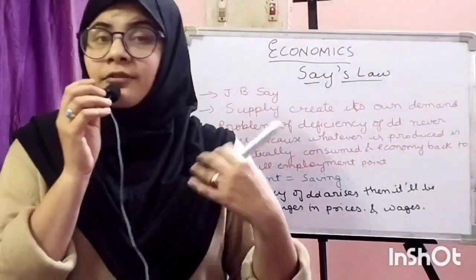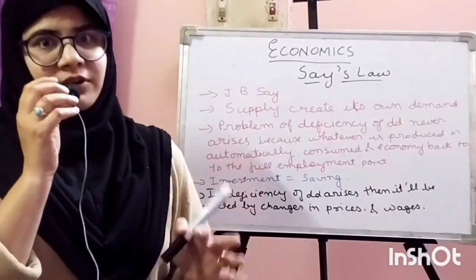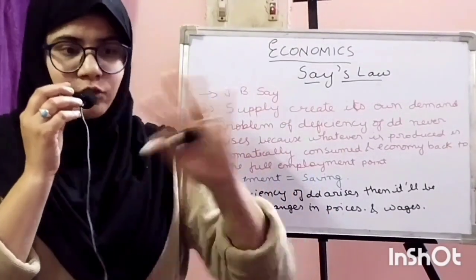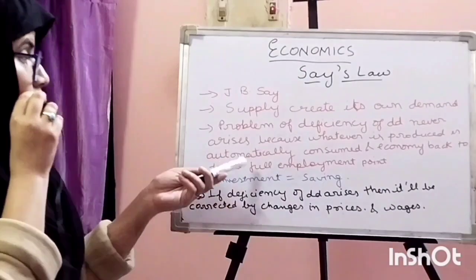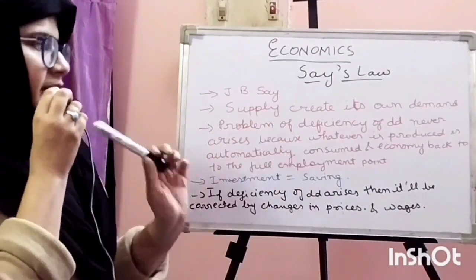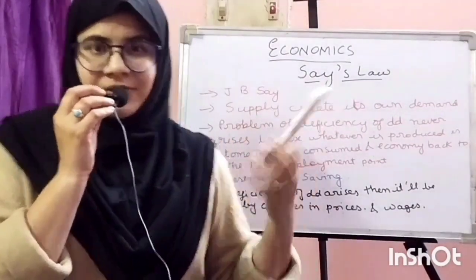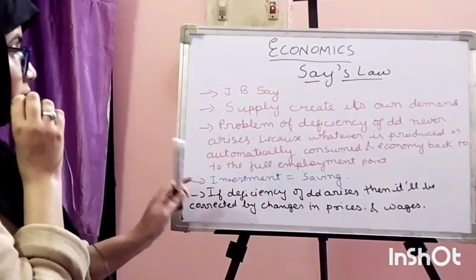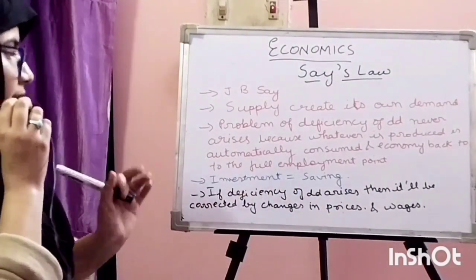The economy comes back to the full employment point. Classical economists always believed in the full employment situation. Full employment is the situation where all the resources are fully utilized — all laborers and workers are engaged in their work. Classical theory always believes that the economy, at the end of the day, will come back to the full employment situation.